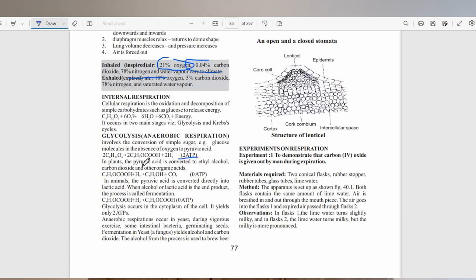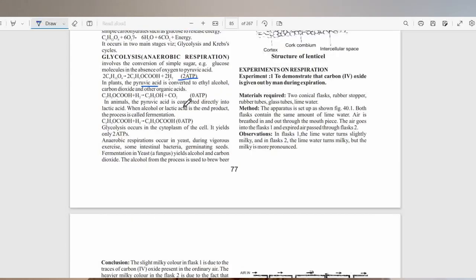This is a very low amount of energy. In plants, you have pyruvic acid as a special product. When glycolysis occurs, you have pyruvic acid being formed and hydrogen, in addition to the ATP produced. In plants, pyruvic acid is converted to ethyl alcohol and carbon dioxide and other organic acids. In animals, pyruvic acid is converted directly into lactic acid. When alcohol or lactic acid is the end product, the process is called fermentation.